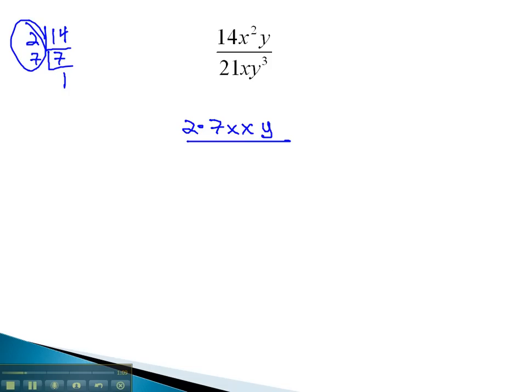In the denominator, we have 21. Let's find its prime factorization. Divide by 3 seven times, divide by 7 once. So its prime factorization is 3 times 7.